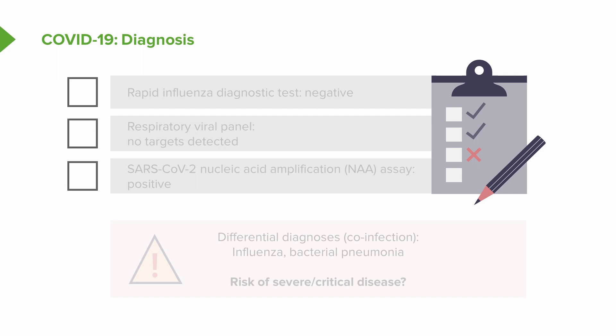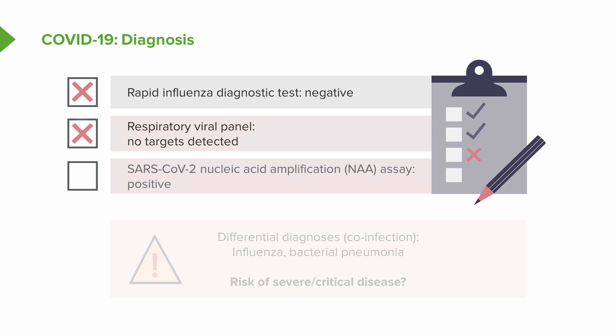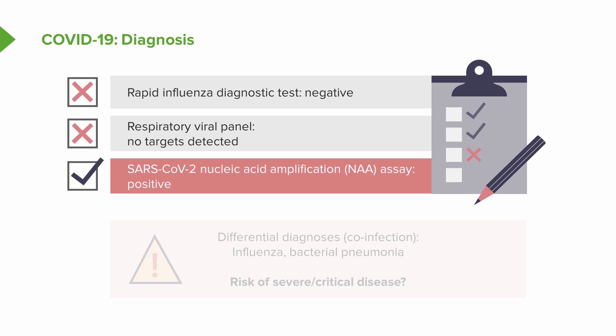Rapid testing for influenza came back negative, as did molecular diagnostics for other respiratory virus panels — making those diagnoses less likely, though not completely excluded. However, his nucleic acid amplification assay is positive for SARS-CoV-2, the cause of COVID-19, allowing a strong presumptive diagnosis of COVID-19. Co-infection remains possible, especially with influenza, and bacterial superinfection is also still a consideration. This case shows a typical progression and findings for an advanced case of COVID-19 that began with mild disease.